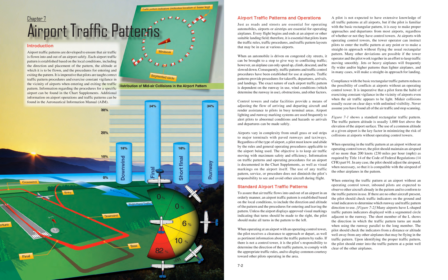Information on traffic patterns and operating procedures for an airport is documented in the chart supplements, as well as visual markings on the airport itself. The use of any traffic pattern, service, or procedure does not diminish the pilot's responsibility to see and avoid other aircraft during flight. An airport traffic pattern is established based on local conditions, to include the direction and altitude of the pattern and the procedures for entering and leaving the pattern.